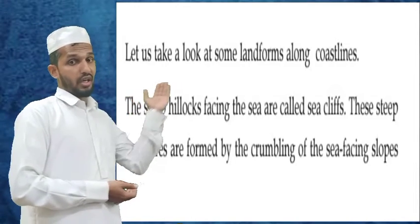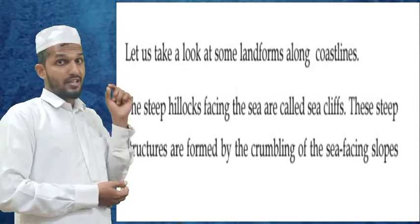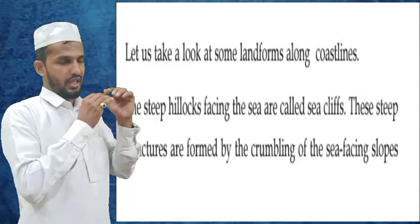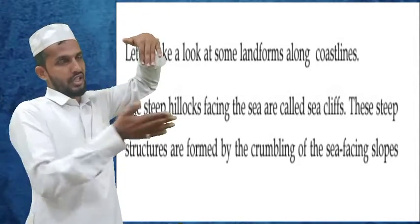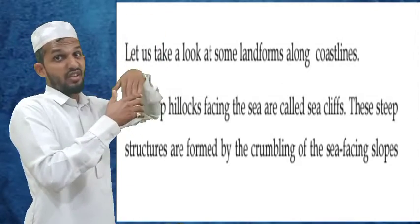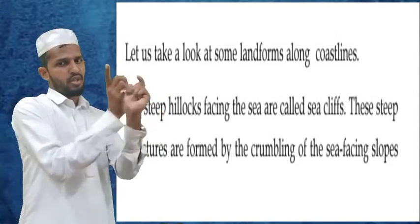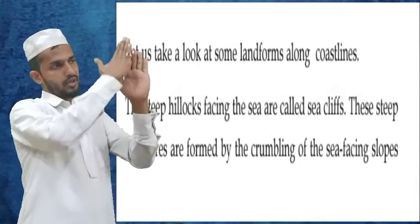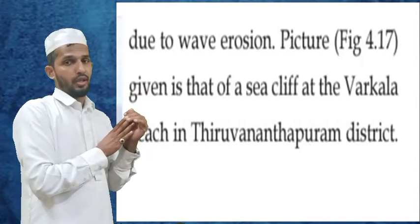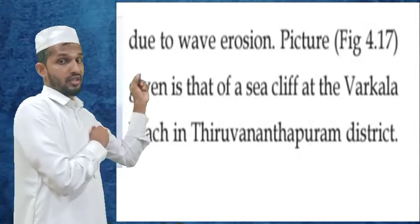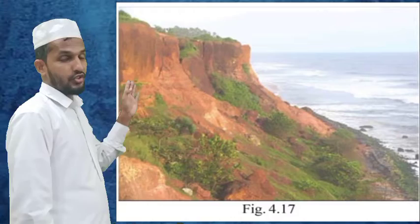Let's look at some landforms along coastal lines. The steep hillocks facing the sea are called sea cliffs. This steep structure is formed by the carving of the sea-facing slope. Due to wave erosion, picture 4.17 shows a sea cliff at Okhada beach in Thiruvananthapuram district. This is the sea cliff.